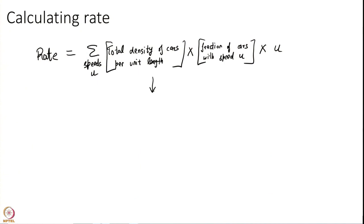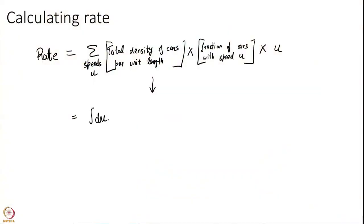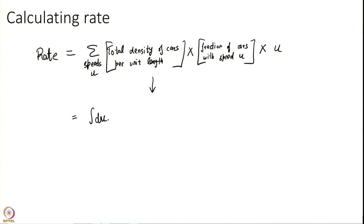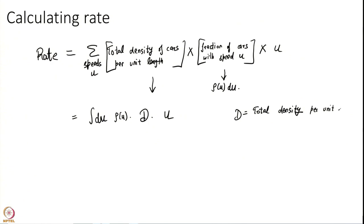I can generalize this further. If I have a continuous distribution of speeds rather than a discrete summation, this summation becomes an integral. Imagine cars at all possible speeds — not only at 30 but also at 30.001, 30.002 — every speed has a distribution. That is how molecules behave, and I am trying to get to molecules from cars. So the fraction gets replaced by a density: the rate equals the integral of the total density d × ρ(u) du × u, where ρ(u) du is the fraction of cars at speed u.